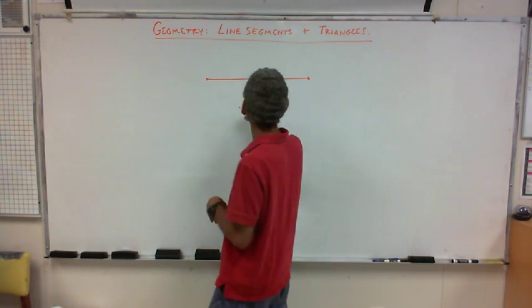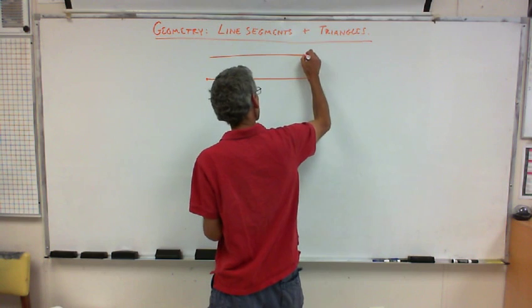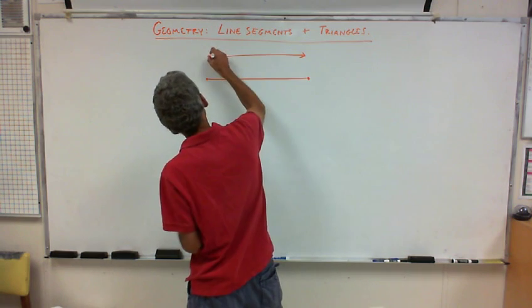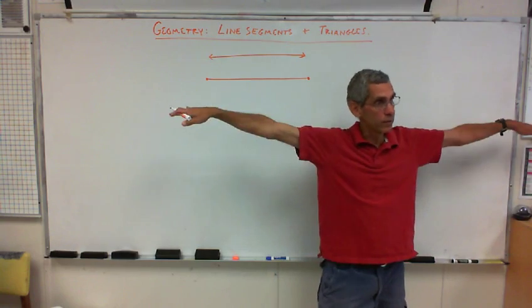So, this would be a line, and this right here would be a segment where you have a dot on each end, right? So, it starts and it stops. But if the line goes, if you just draw a line like this, technically, there are hidden arrows on the end of that line. It goes on forever and ever, right?